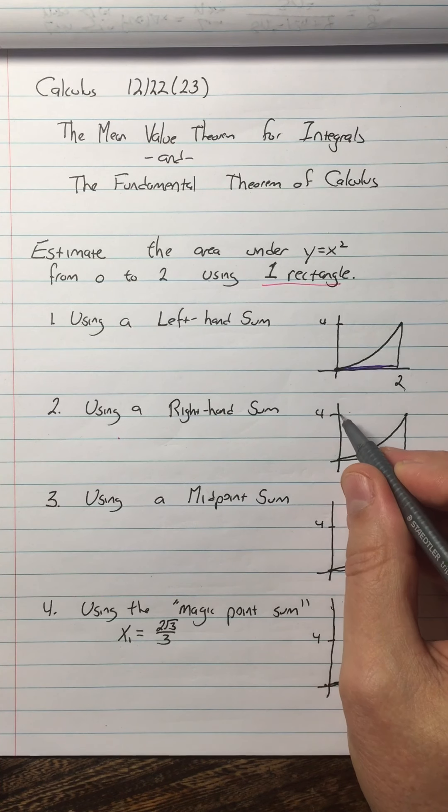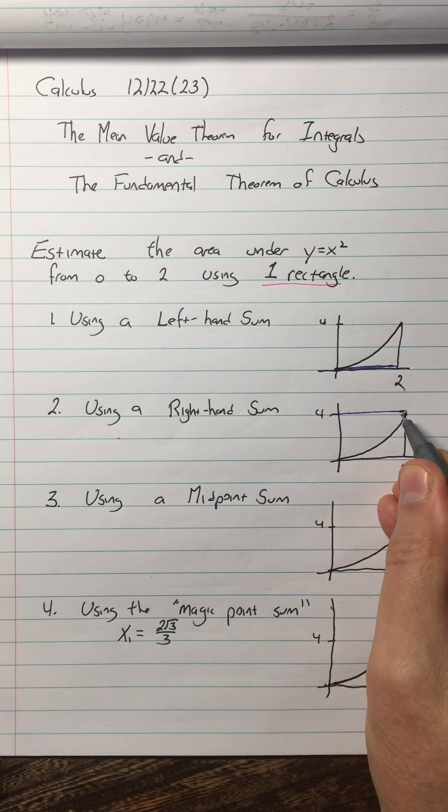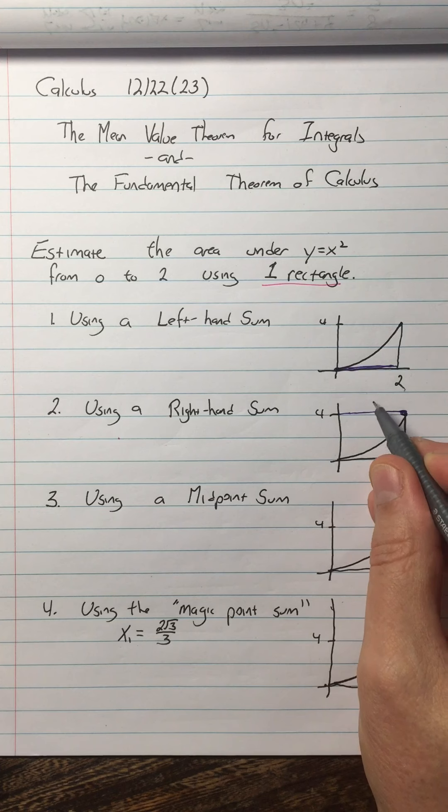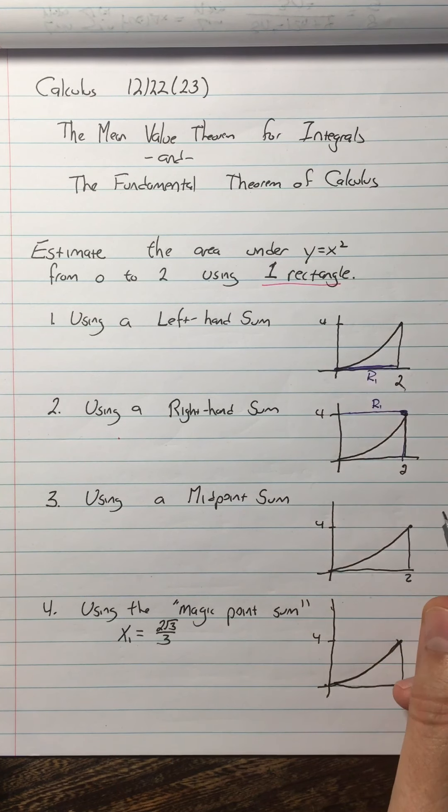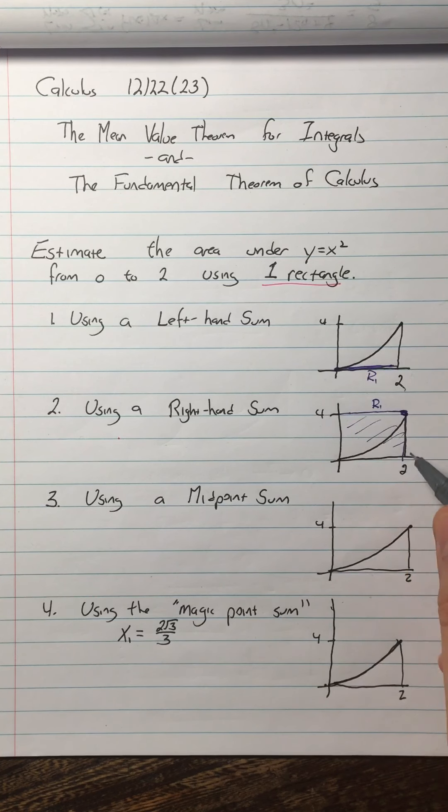When we do the right-hand sum, we're going to have a rectangle that touches on the right, and so I only have one rectangle, r1 or we could call it a1 or whatever. And that area is clearly eight.